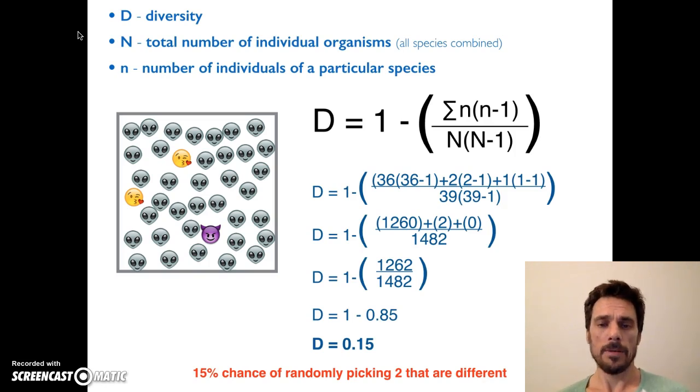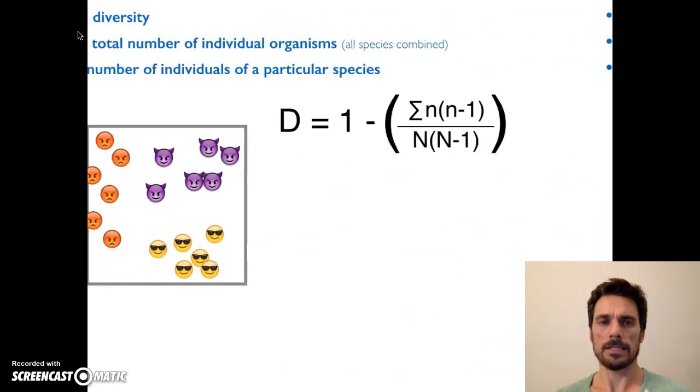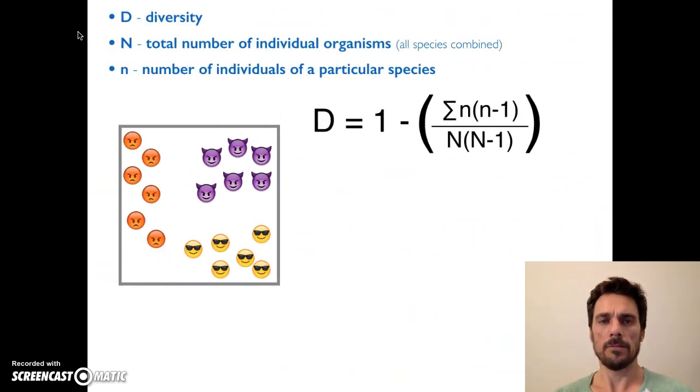So what does that tell me? Well, that's actually a probability. This is very low diversity, by the way. And the probability says that if I were to pick two randomly out of this square, there would be a 15 percent chance that I would pick different ones. The lower the number, the less diversity, and that's because one of these species dominates. You can see the alien faces really dominate and there's not a lot of anything else.